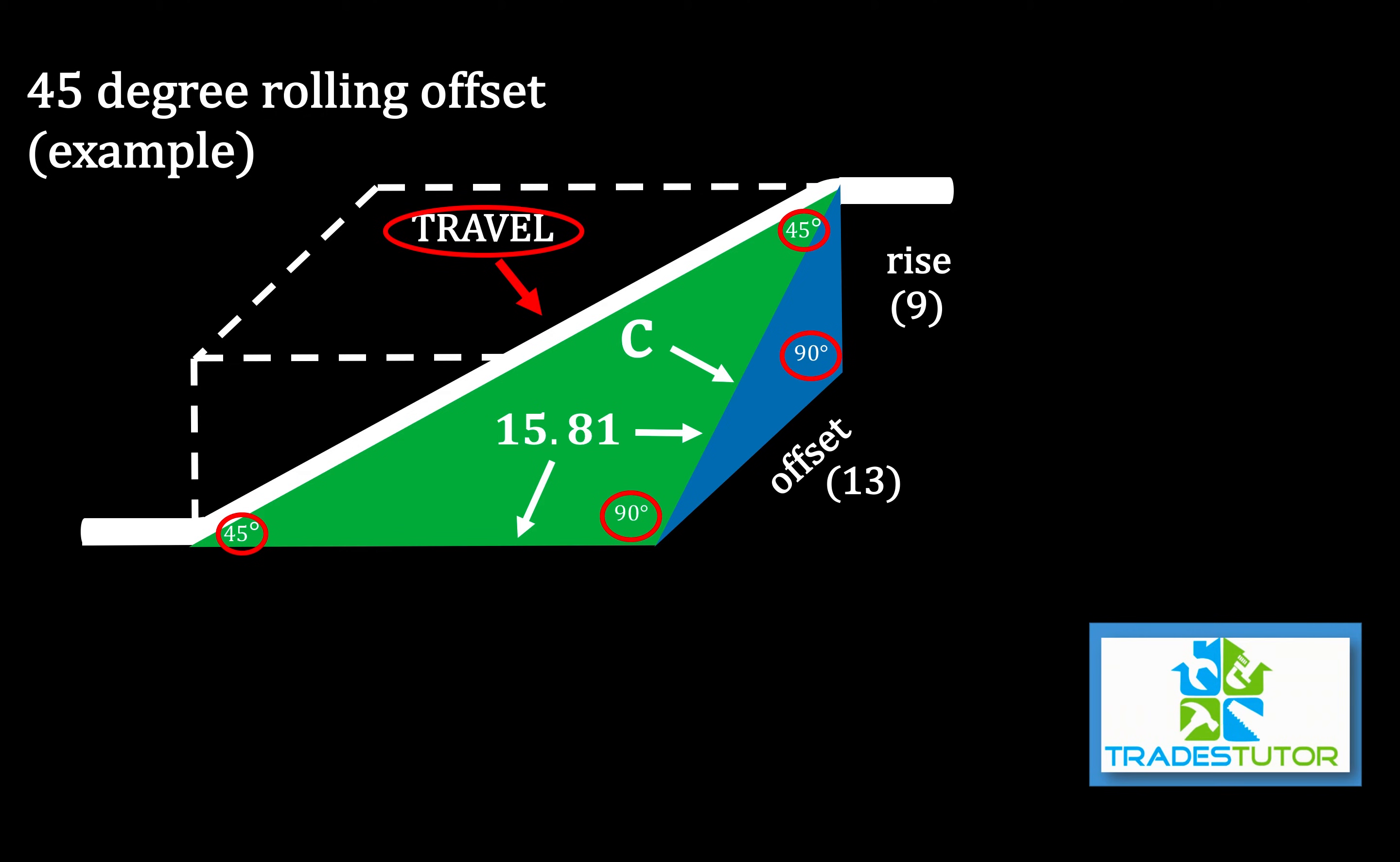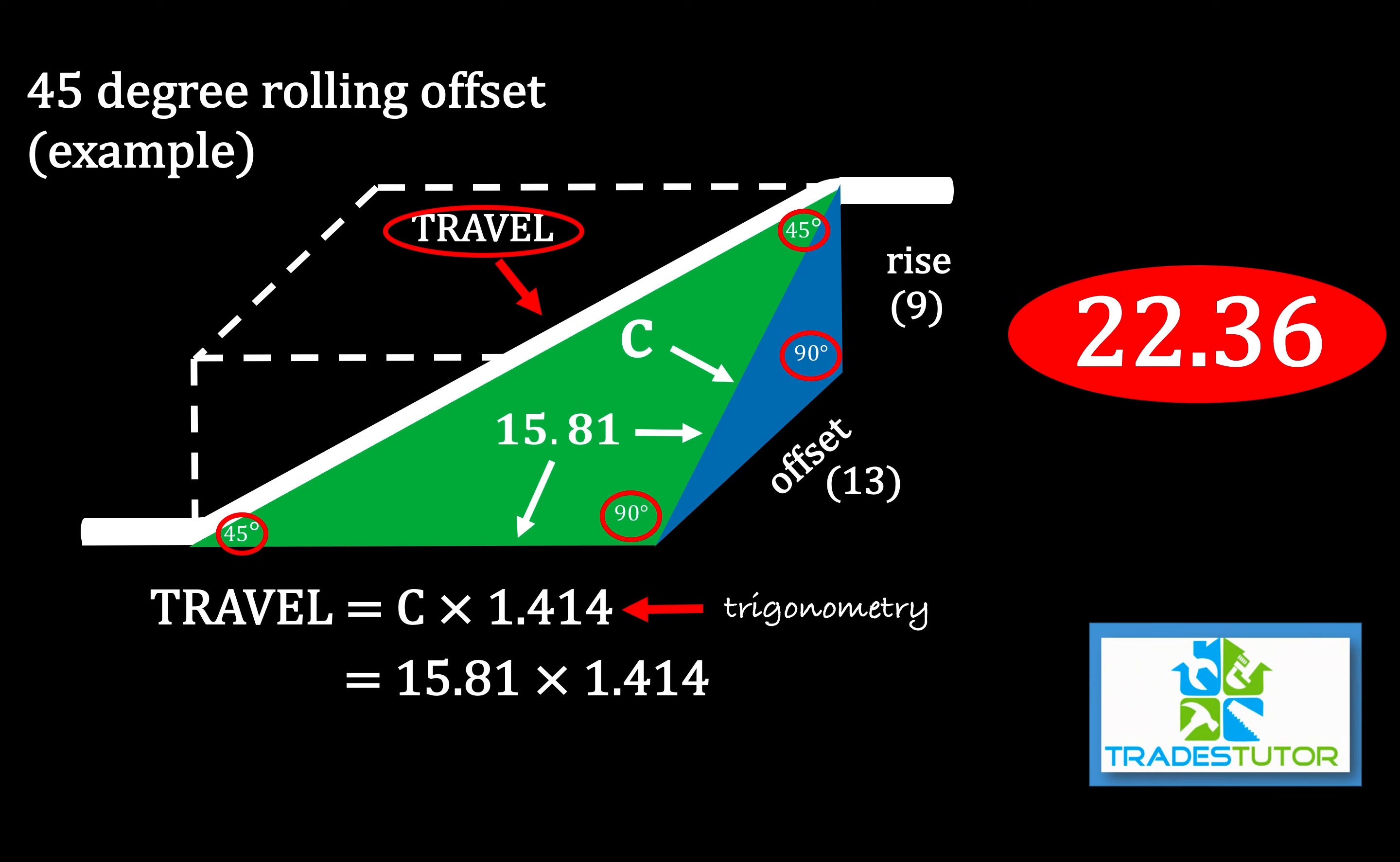And then when we get to the travel, what we'll find is the travel is equal to C times 1.414. That's a little bit of trigonometry action going on for you. So we do that calculation, 15.81 times 1.414, and we end up with 22.36. That is your travel.